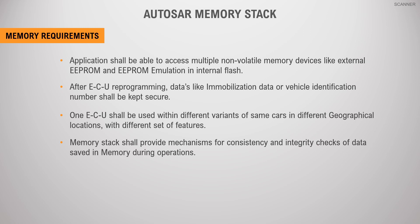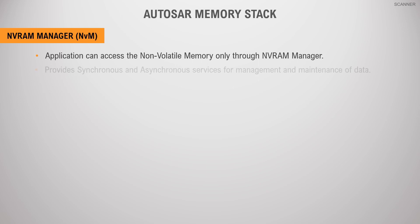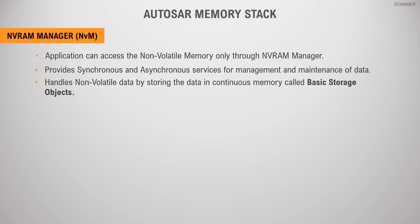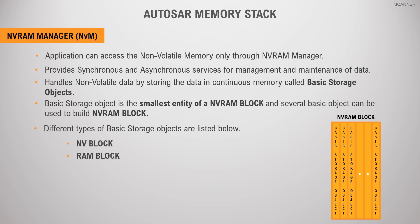Let us try to understand the NVRAM Manager in detail. In Autosar, an application can access non-volatile memory only through the NVRAM Manager. This module provides the required synchronous and asynchronous services for the management and maintenance of non-volatile data. It handles non-volatile application data by storing it in continuous memory blocks called basic storage objects. A basic storage object is the smallest entity of an NV-RAM block, and several basic objects can be used to build an NVRAM block. These basic storage objects can reside in different memory locations: non-volatile memory, random access memory, or read-only memory. Below is the list of different types of basic storage objects used to build an NVRAM block.